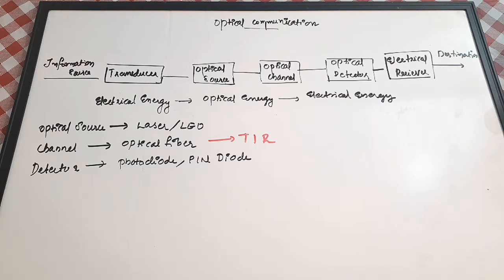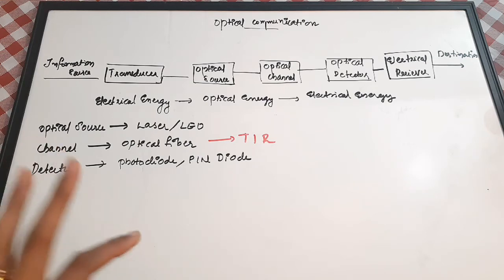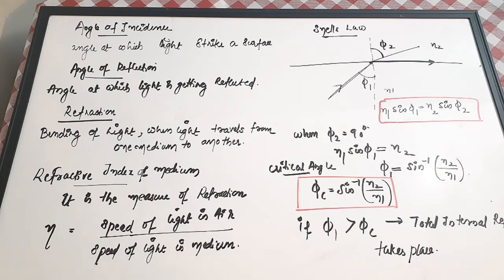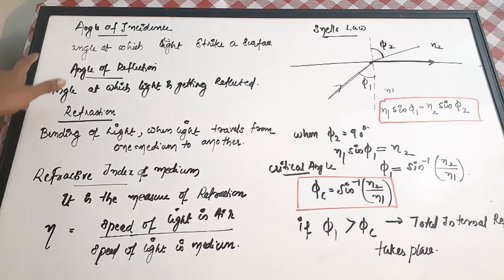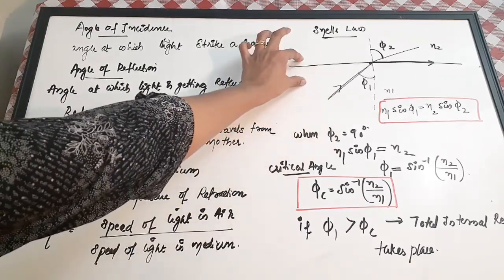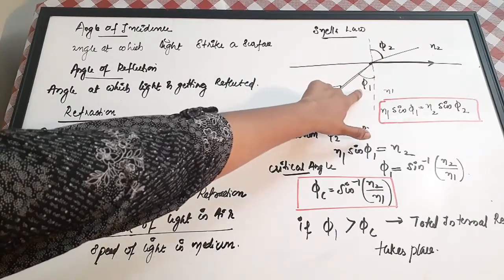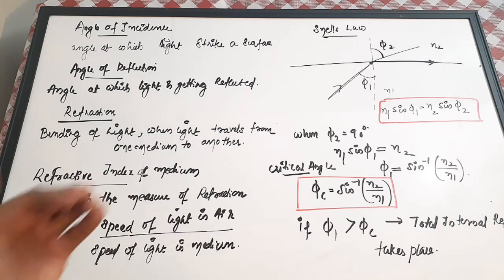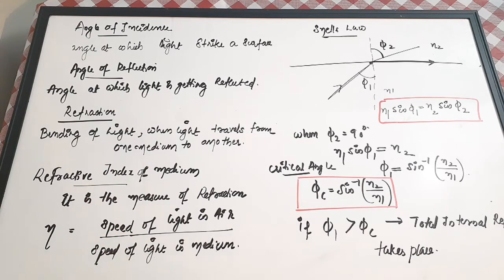Before going into optical fiber, let's see the properties associated with light. The angle of incidence is the angle at which light strikes a surface. The angle of reflection is the angle at which light is reflected from that surface.